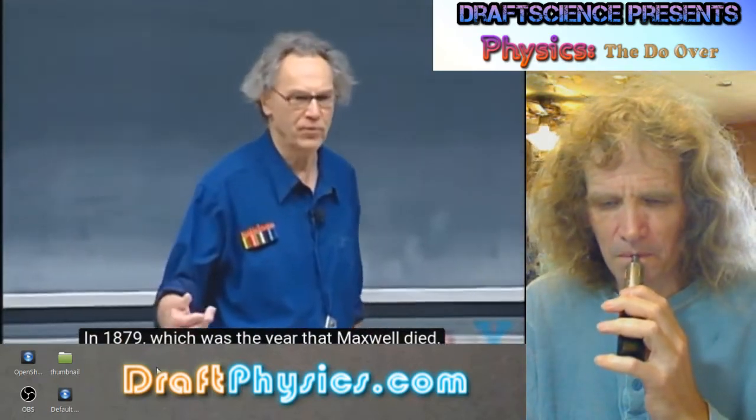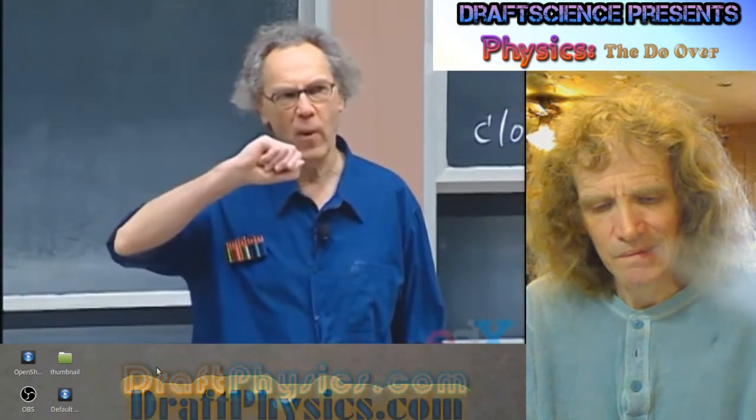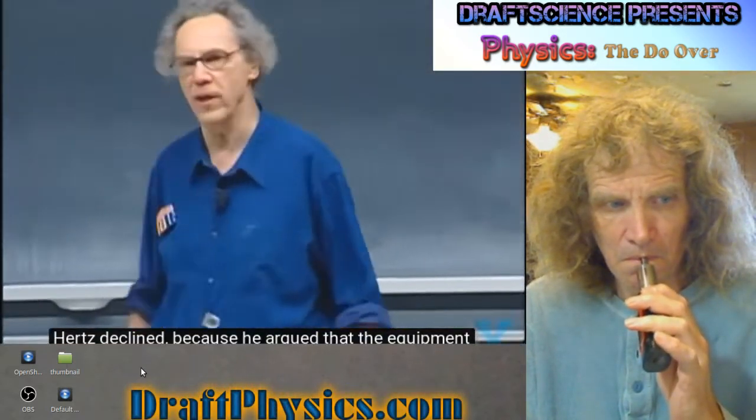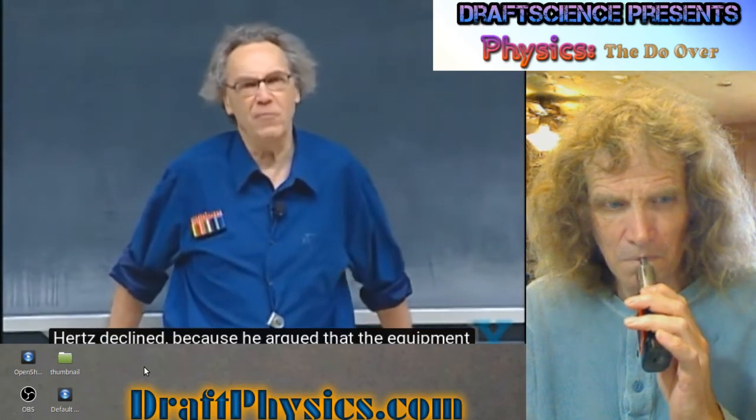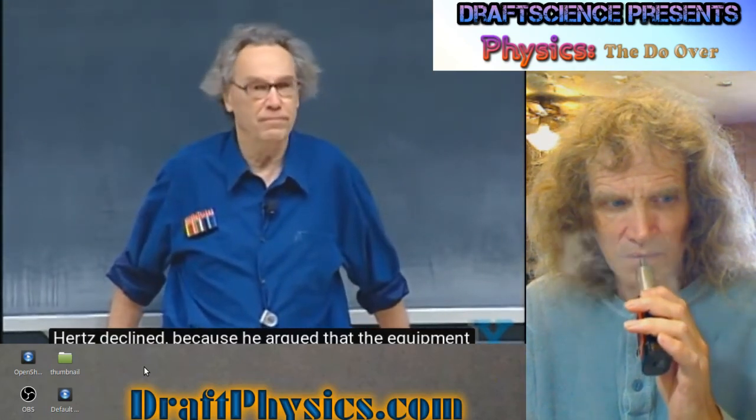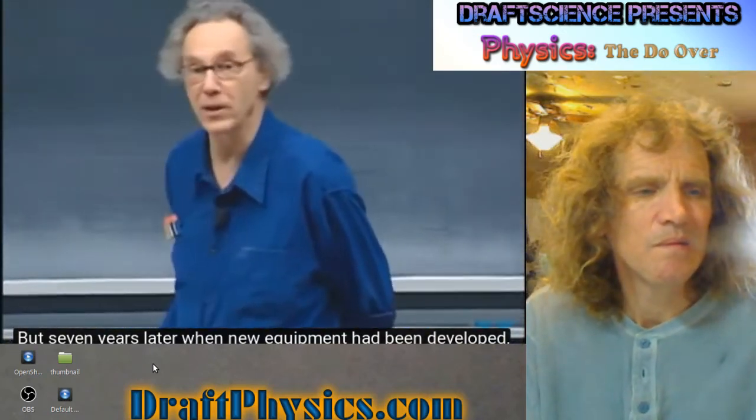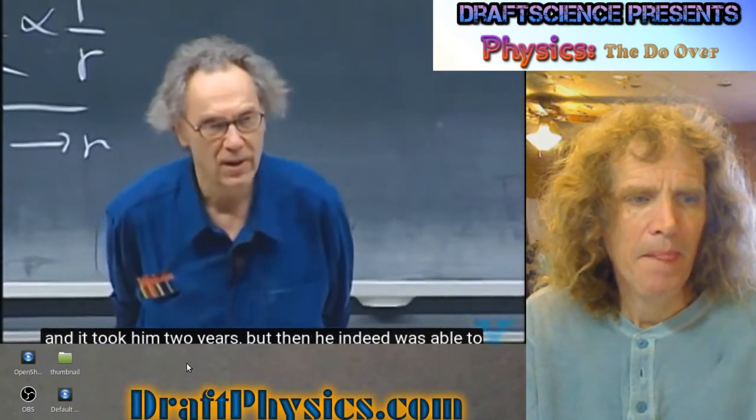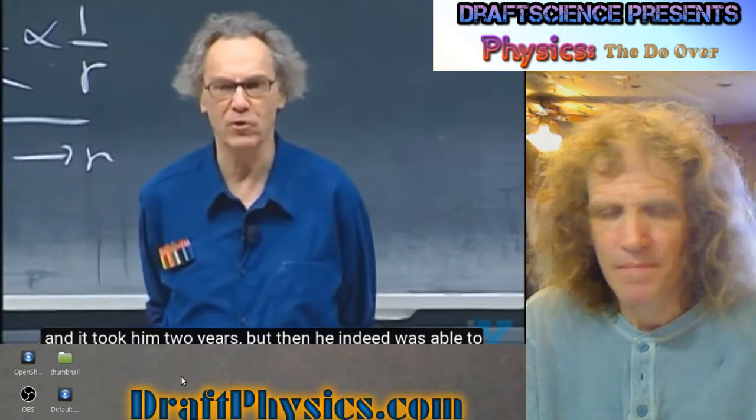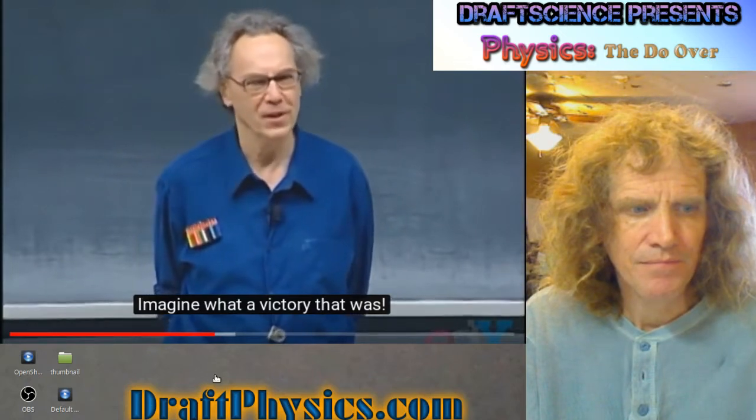In 1879, which was the year that Maxwell died, the German physicist Helmholtz asked one of his students, Hertz. He was 22 years at the time. He was a junior to try to demonstrate that radio waves indeed exist. Hertz declined because he argued that the equipment that was available at the time was not good enough. Seven years later, when new equipment had been developed, he accepted the challenge. And it took him two years that he indeed was able to demonstrate that radio waves do exist. Imagine what a victory that was.